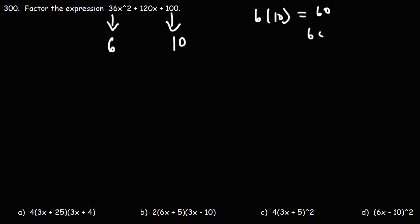And then we're going to double it. 60 times 2 is 120. If that gives us the middle coefficient, which it does, then you're dealing with a perfect square trinomial.